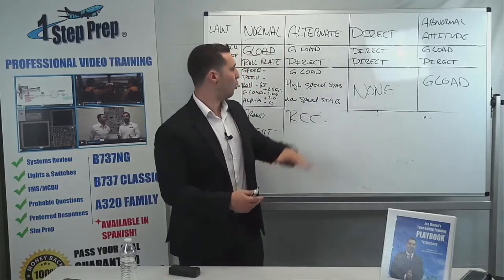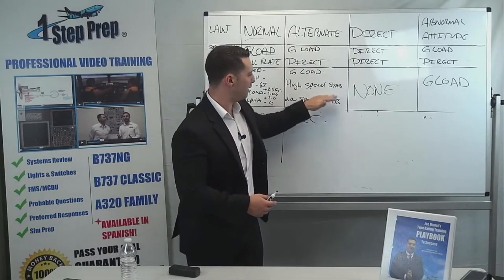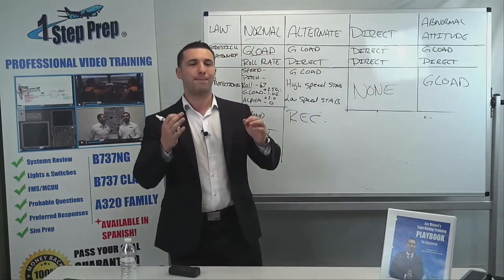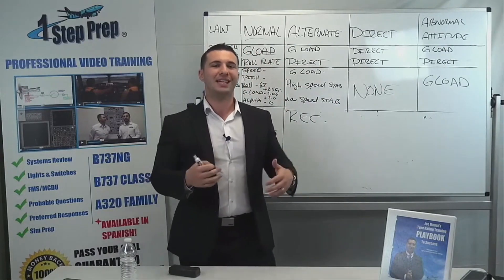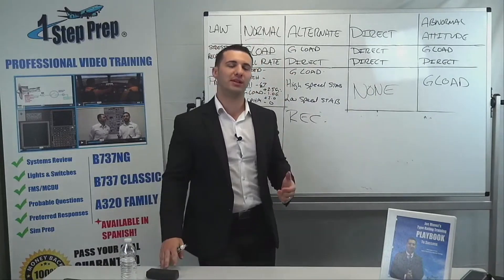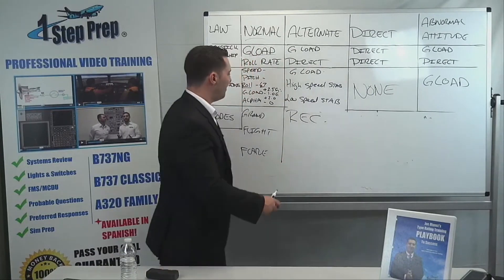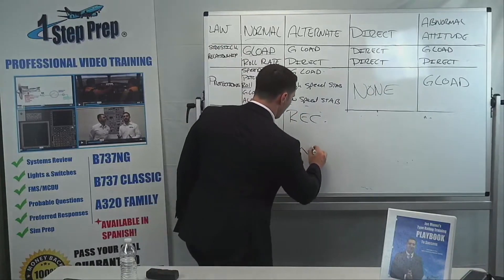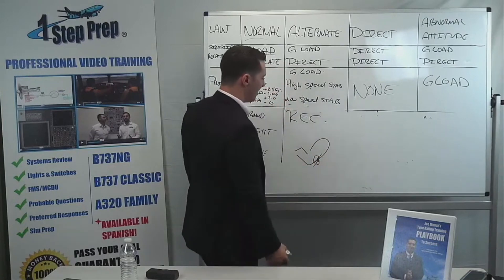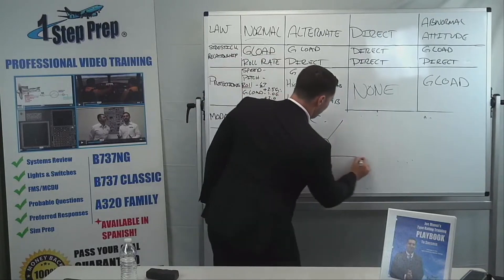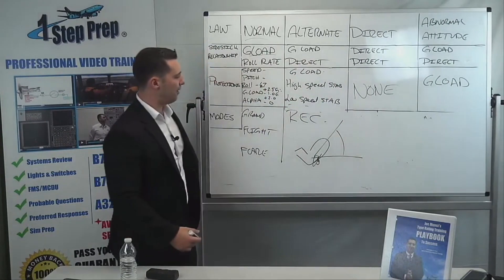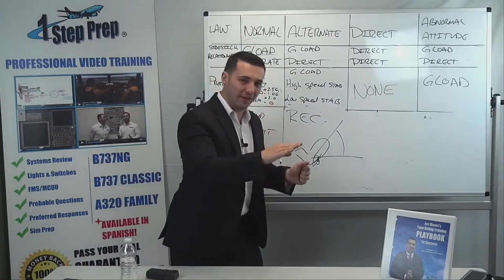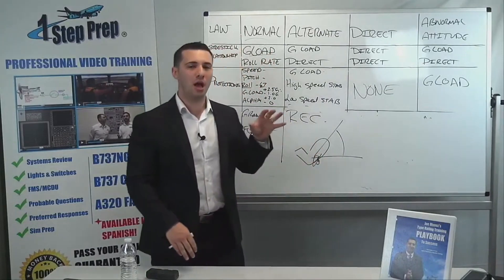What happens with the stability is that when you're in alternate law and a stability activates, you're going to get either a nose down or a nose up pitching moment to guide you as to what you should be doing with the aircraft's pitch attitude. In the case of a low speed stability, that's because the aircraft is nosed up at a fairly aggressive angle of attack, and the aircraft is saying that angle of attack is way too high — I would recommend you lower the nose. It will give you a nose down pitching moment.